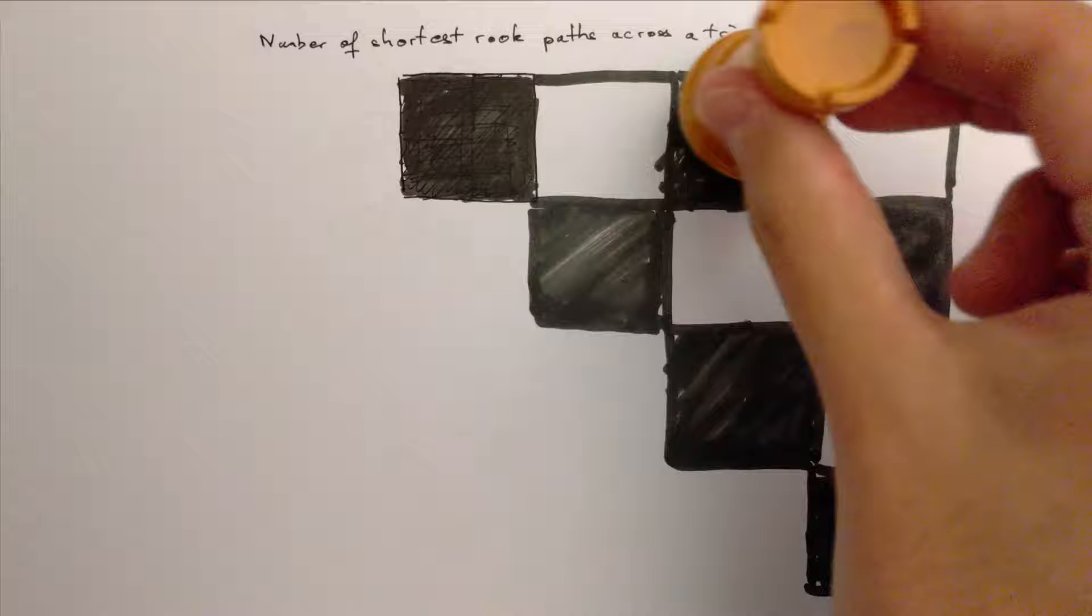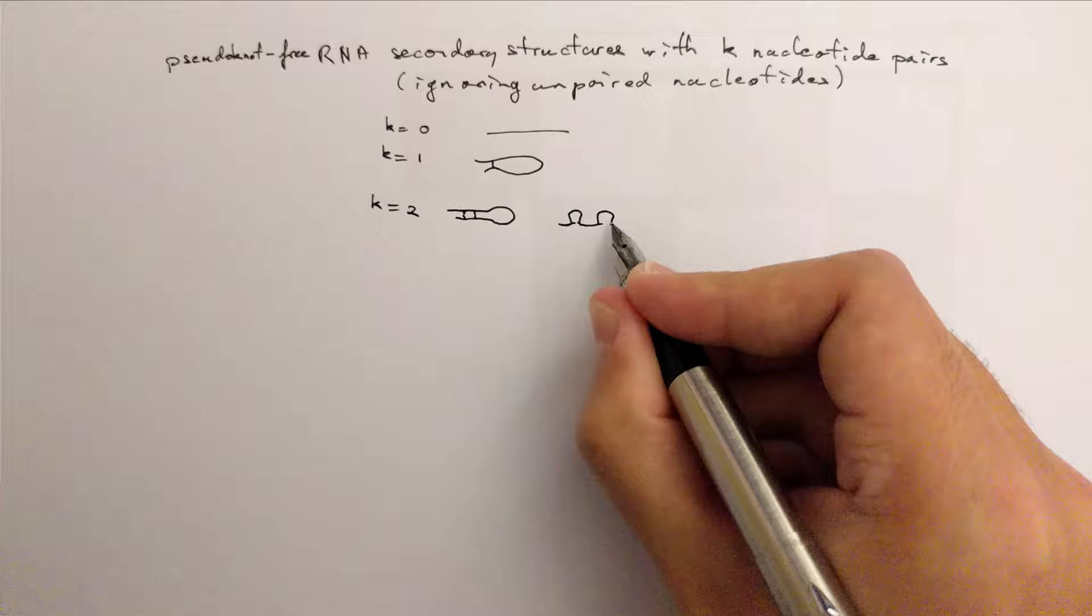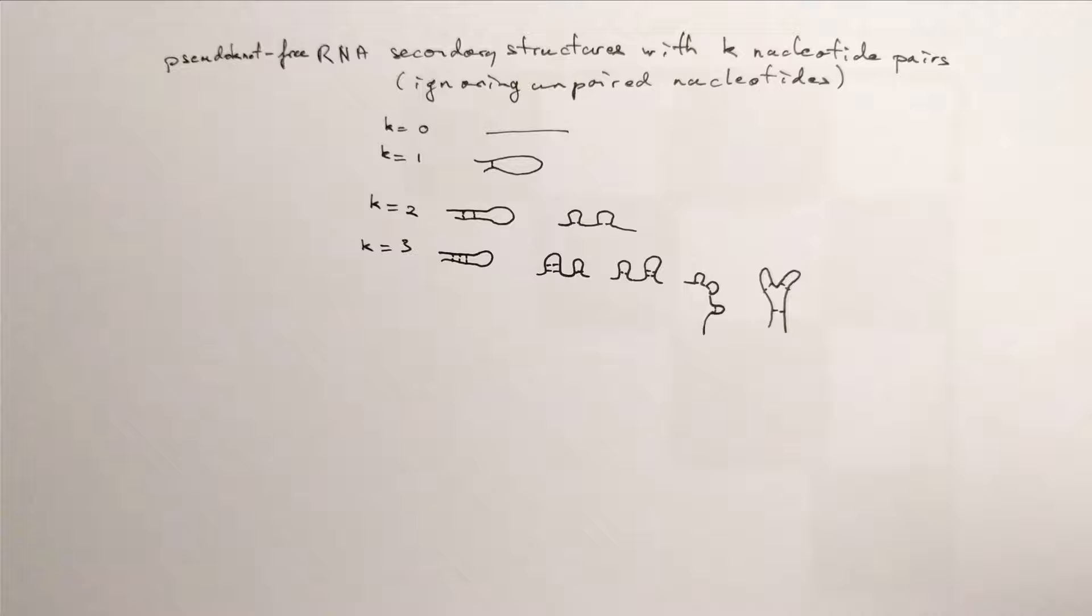It is the number of pseudoknot-free RNA secondary structures with k-paired nucleotides, ignoring unpaired nucleotides. The list goes on.